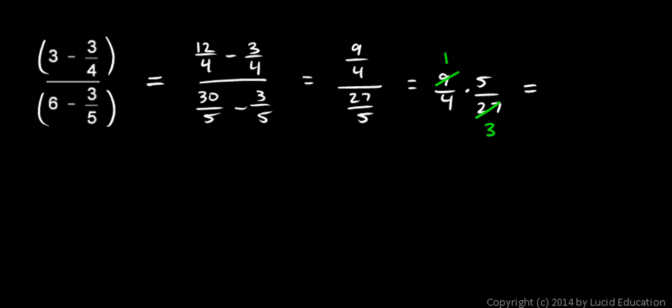And then we multiply our numerators. 1 times 5 is 5. And in the denominator, 4 times 3 is 12. And we're done.